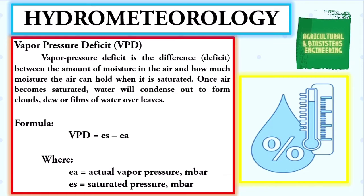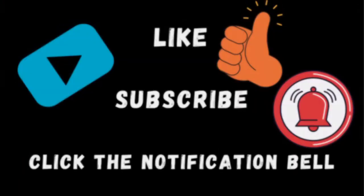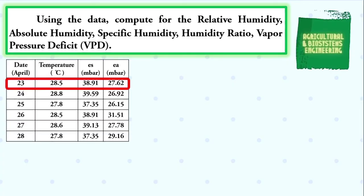Now that we have defined each of these humidity measurements, we begin solving our problem. The problem states: using the data, compute for the relative humidity, absolute humidity, specific humidity, humidity ratio, and the vapor pressure deficit. Since the problem has six days in the month of April, we will individually solve for their values. But before that, don't forget to like, subscribe, and click the notification bell. We begin from April 23rd.